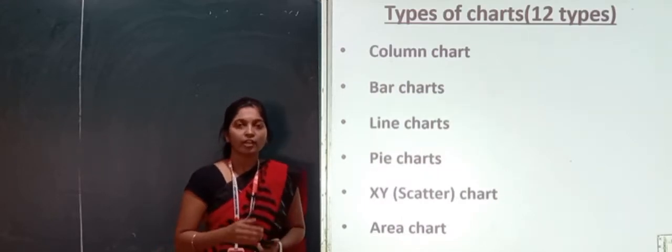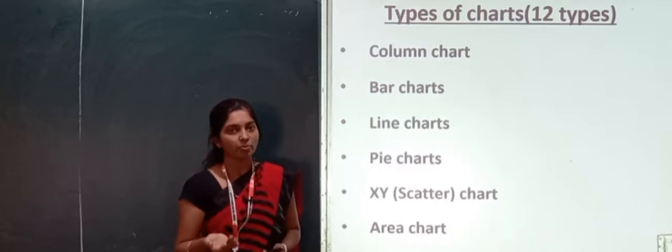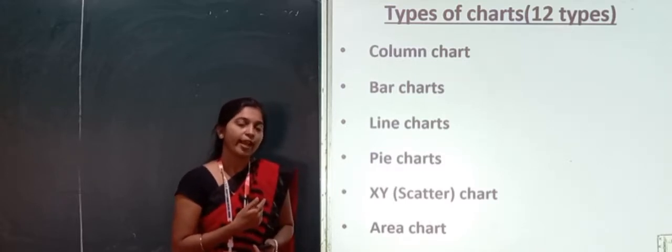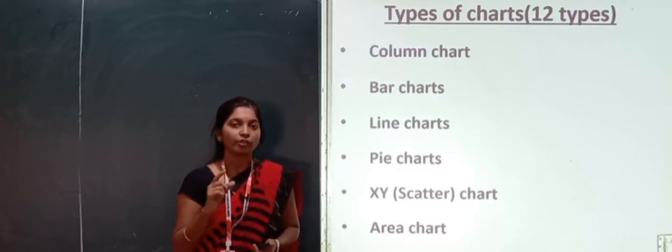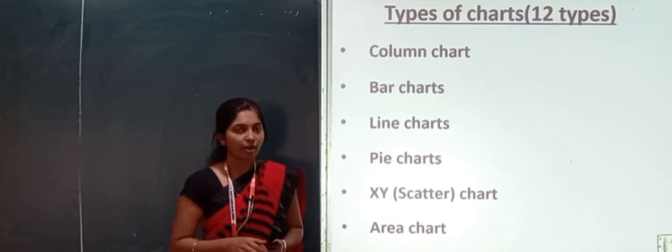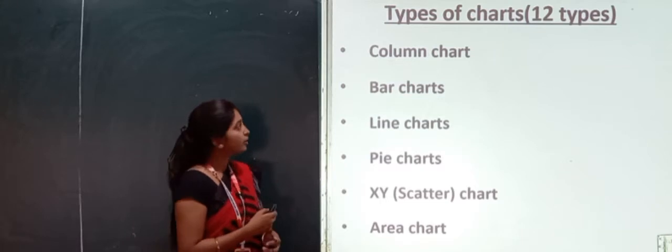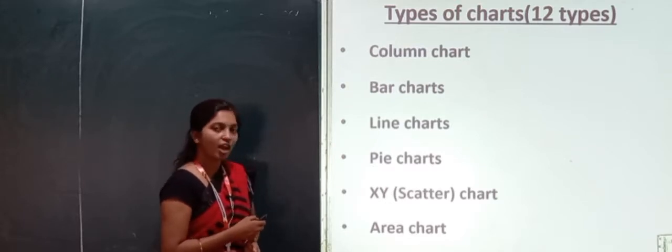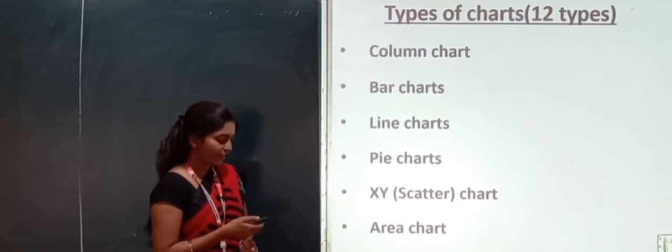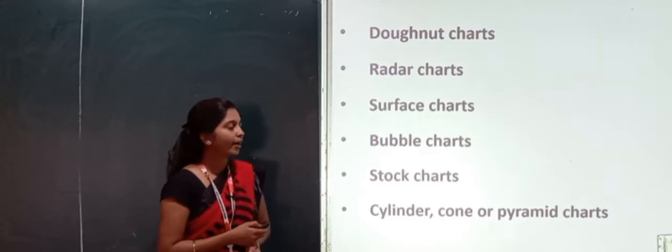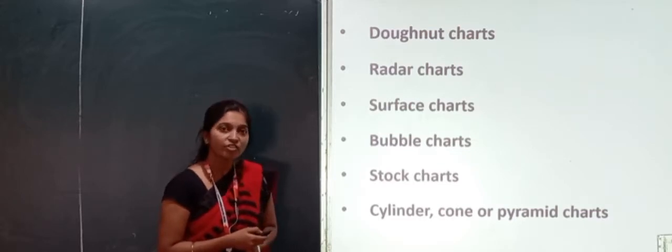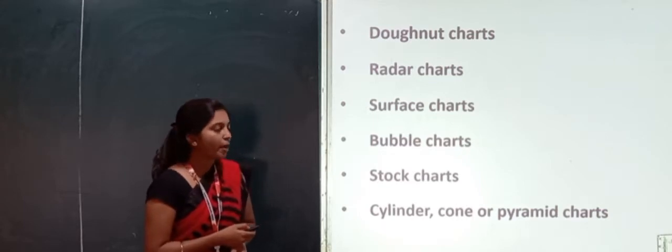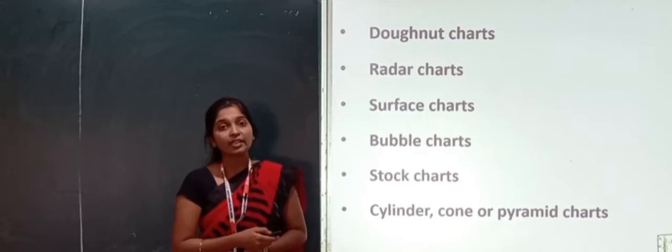Next, types of charts. Till now, what we have discussed? How to create a chart? Now, we have various types of chart. We have 12 types. You may get a question on this for 15 marks. Explain the different types of chart with neat diagram. Each chart you have to explain with a diagram. We will discuss one by one. So, we have 12 charts. The first one is column chart. Bar chart. Line chart. Pie chart. XY scatter chart. Then, area chart. Donut chart. Radar chart. Surface chart. Bubble chart. Stock chart. And the last one is cylinder, cone or pyramid chart. We have 12 types of charts. We will discuss one by one.